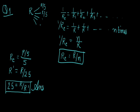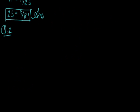So option D is correct. Next question: which of the following terms does not represent electrical power in the circuit? The options are I²R, IR², VI, and V²/R. These are the direct formulas given in the chapter. Option B — IR² — is not a formula for power, so option B is right.